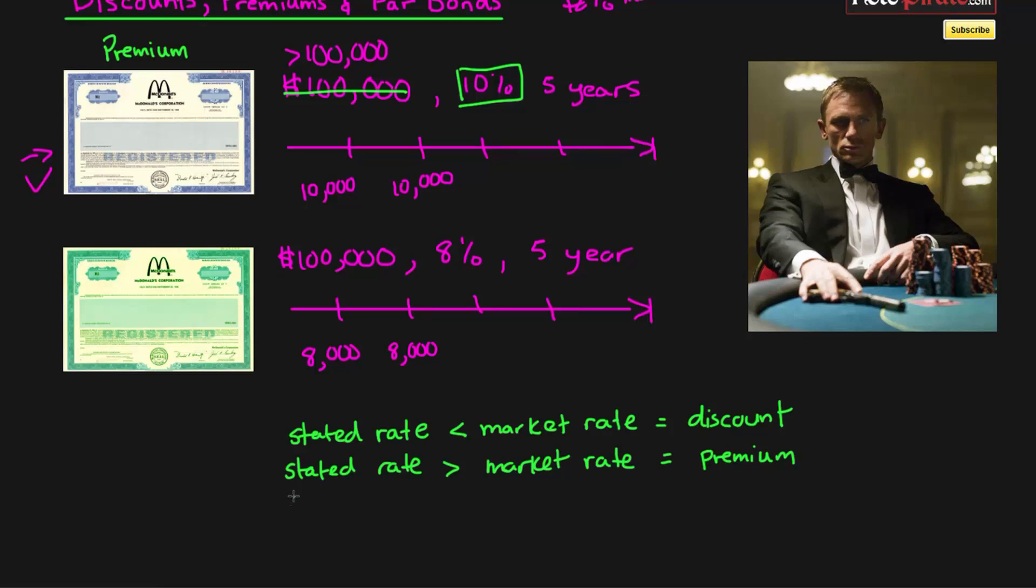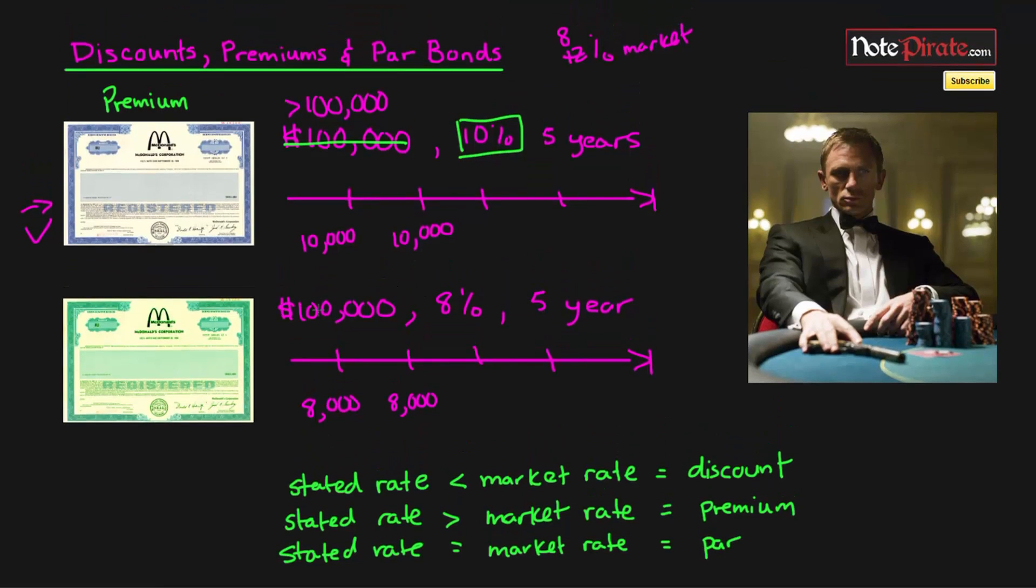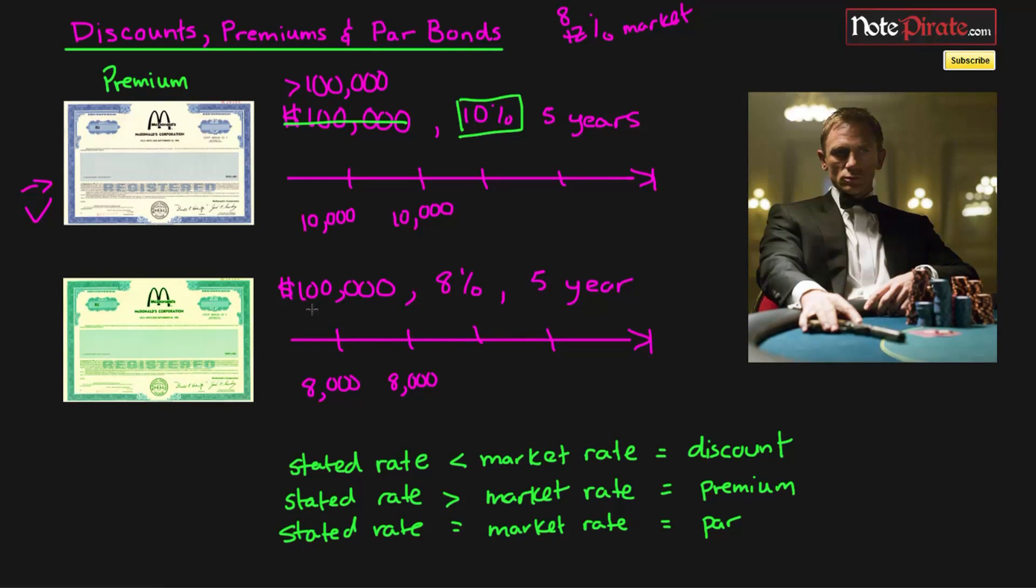And if the stated rate is equal to the market rate, then they'll be trading at par, which just means that the amount that you invest, $100,000, will be the same as the face value or the amount that they'll pay you back at the end, which is also $100,000.